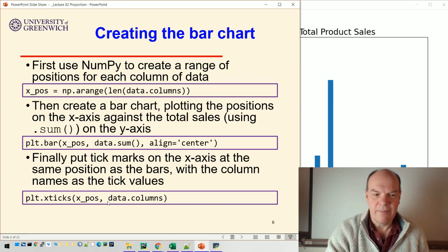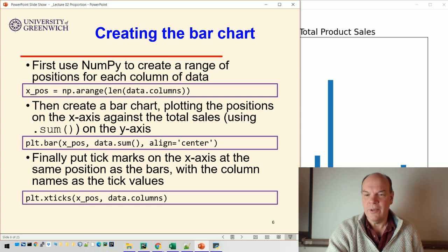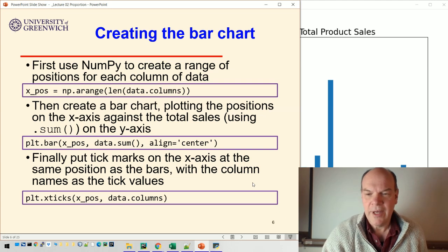You can see that this third line, plt.xticks, puts the product names, which are the column names in those positions. So if I left that line out, I wouldn't get this list A, B, C, D, E, F, G at the bottom. Okay, so that creates our first bar chart.